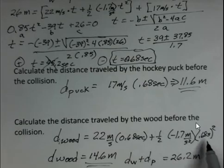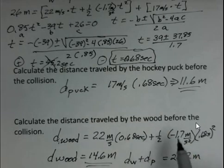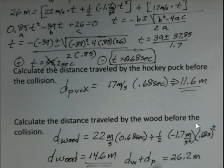We've rounded off here with this 0.68 seconds, it's not an exact number. But we are close to what we should have. 26 meters was the interval between the two objects at the start of the motion.